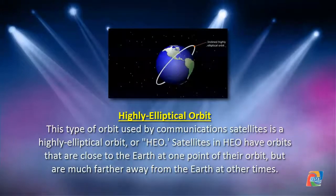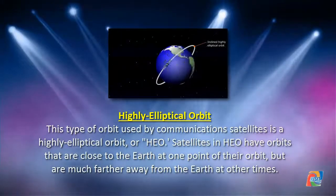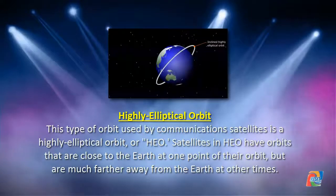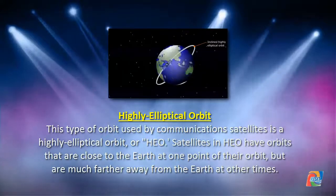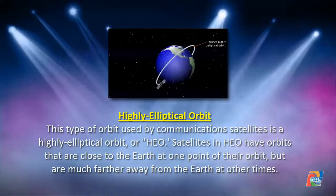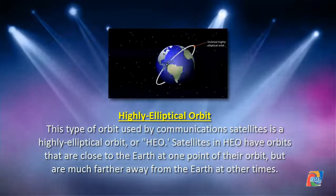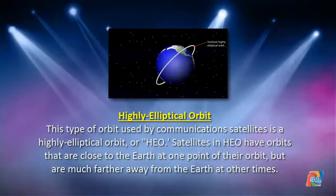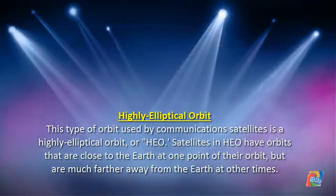Highly elliptical orbit, or HEO, is another type of orbit used by communications satellites. Satellites in a HEO have orbits that are close to the earth at one point of their orbit but are much farther away from the earth at other times.